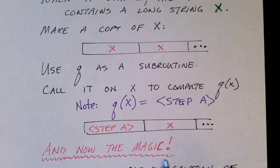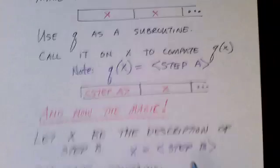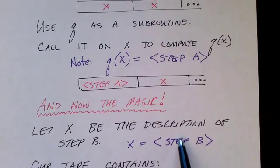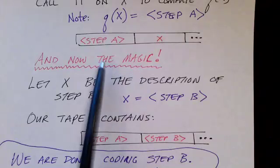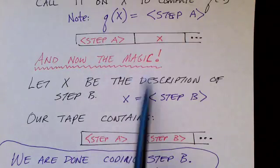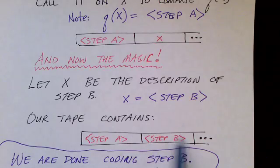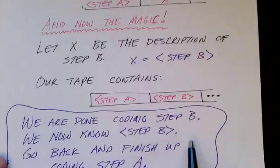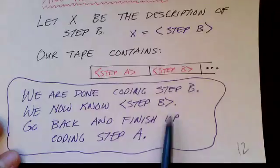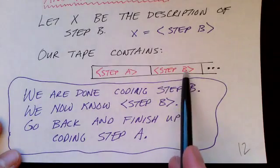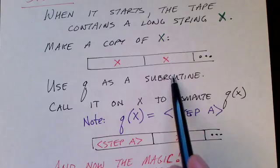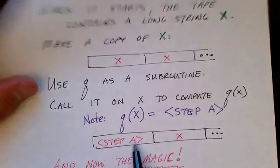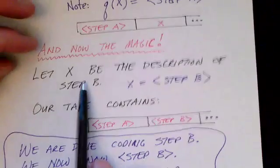And now comes the magic of it all: we just let X be a description of step B. By definition, after we run this, if X is a description of step B, we're left with the tape looking like a description of step A followed by a description of step B. So we're now done coding step B. The code for step B is: make a copy of X, call Q as a subroutine to turn it into a description of step A, and we're done.